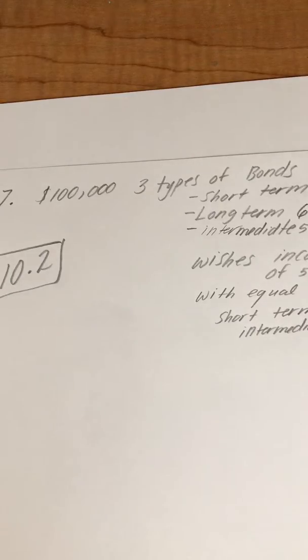It says an investor has $100,000 to invest and is going to invest in three types of bonds: short-term, intermediate-term, and long-term.